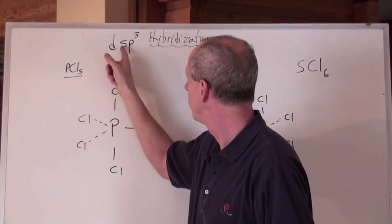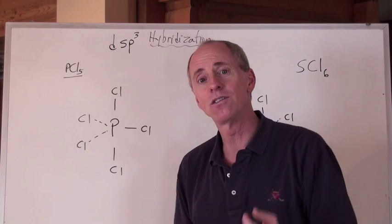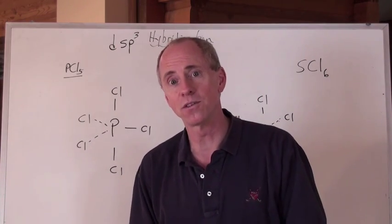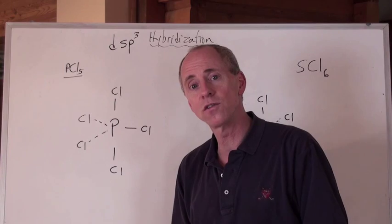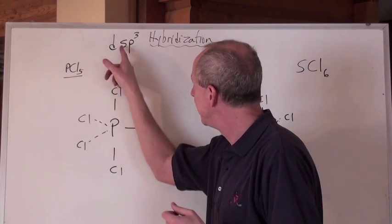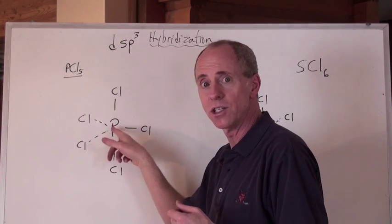And then all of a sudden what you get is a d coming together with an s and 3ps to form dsp3. What's the total? 1, 2, 3, 4, 5. And so that's when you have 5 effective pairs. What is the hybridization of the phosphorus here? That would be dsp3 hybridization.